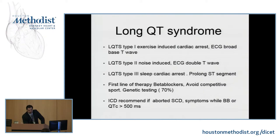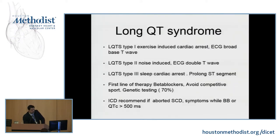The key treatment is to start beta blockers and avoid competitive sport. Genetic testing is actually pretty helpful, up to 70%. Defibrillators are sometimes recommended in long QT syndrome, especially when patients have symptoms, a history of cardiac arrest, or an excessively prolonged QT.